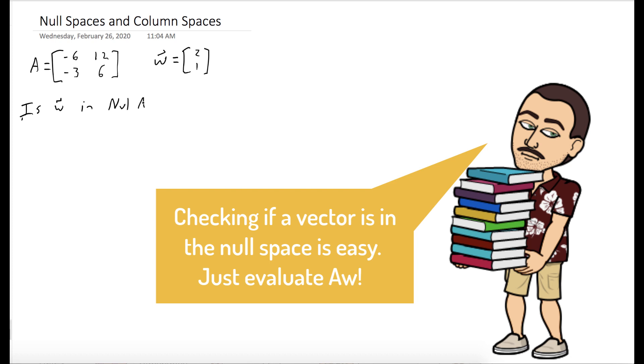And that's really not that hard of a calculation. So we do A times w. In our first row, we get -12 + 12, which is 0. In the next row, we get -6 + 6, which is also 0. So we get [0, 0], which means that w is in the null space of A.